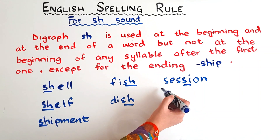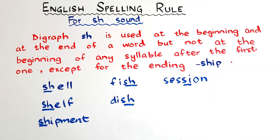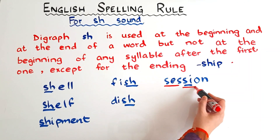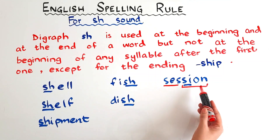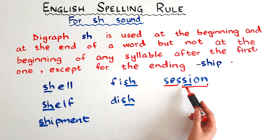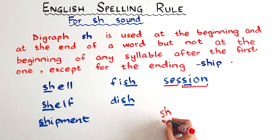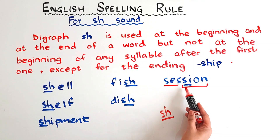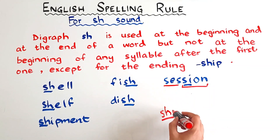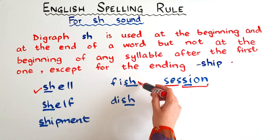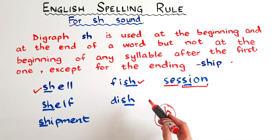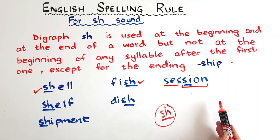Why? Because 'session' is a disyllabic word. Let me mark it for you. It is a disyllabic word and the SH sound is coming at the beginning of the second syllable. So here you cannot write this digraph. You cannot write SH at the beginning of the second or third syllable. It can only come at the beginning of the first syllable or at the end of a syllable, but it cannot begin the second or third syllable.